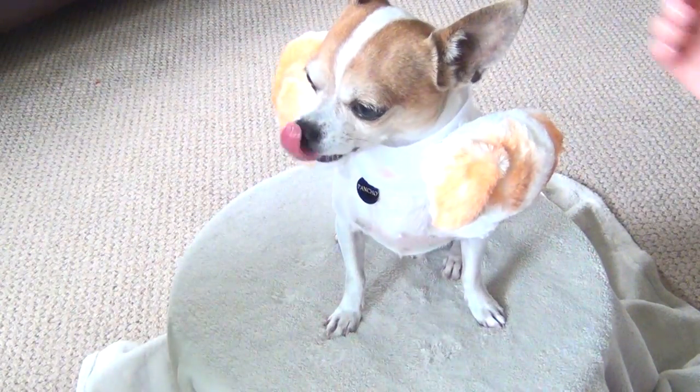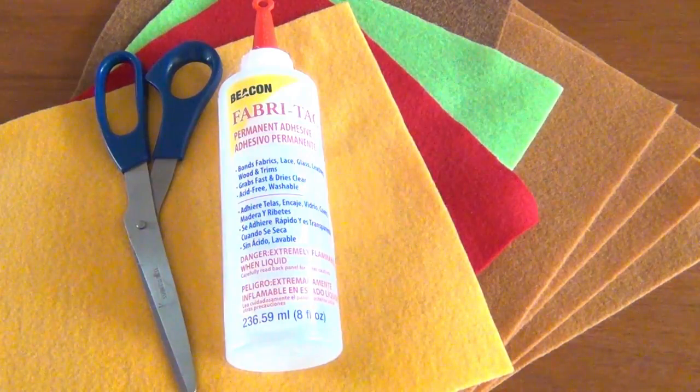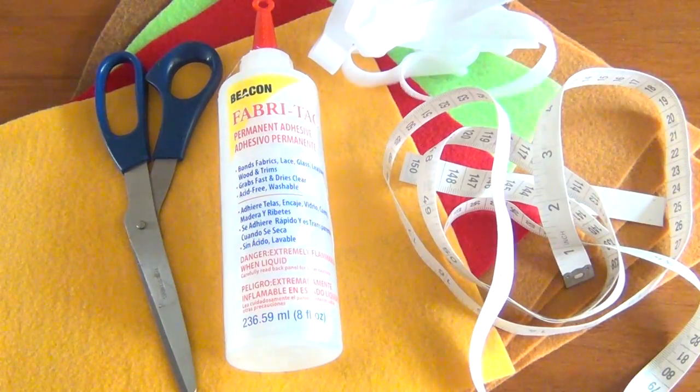For the next one you'll need some taco shell colored felt, meat, lettuce, tomato, and cheese colored felt, fabric tack, scissors, measuring tape, and velcro.